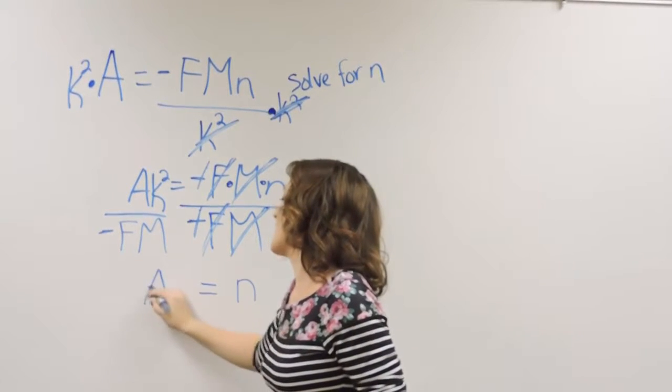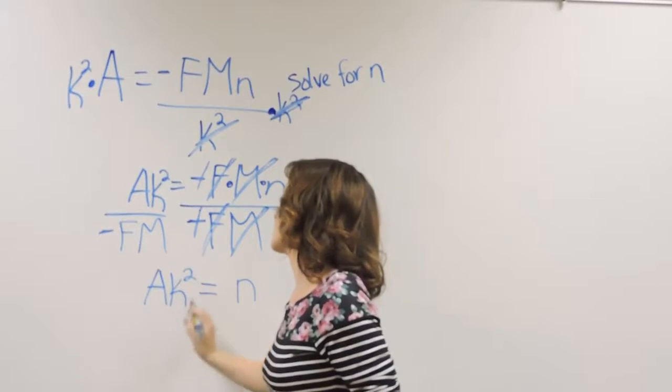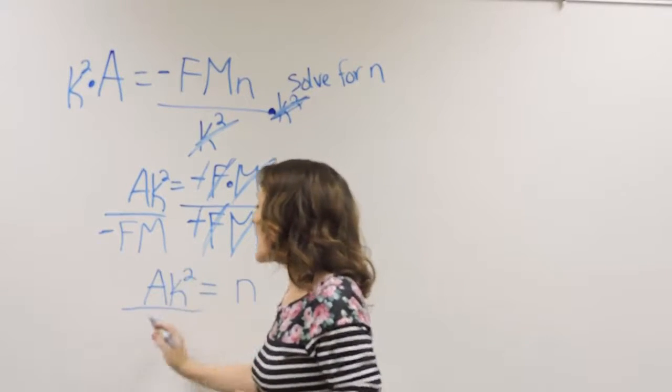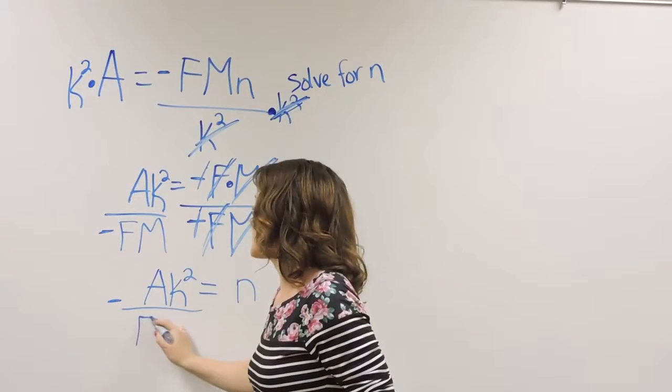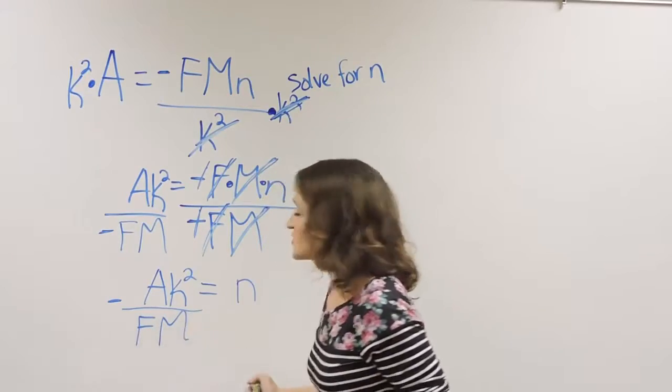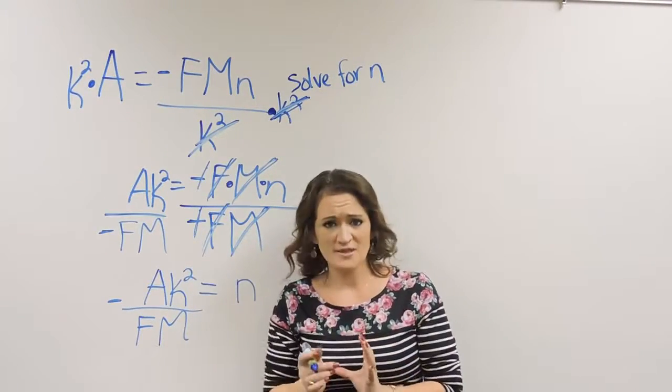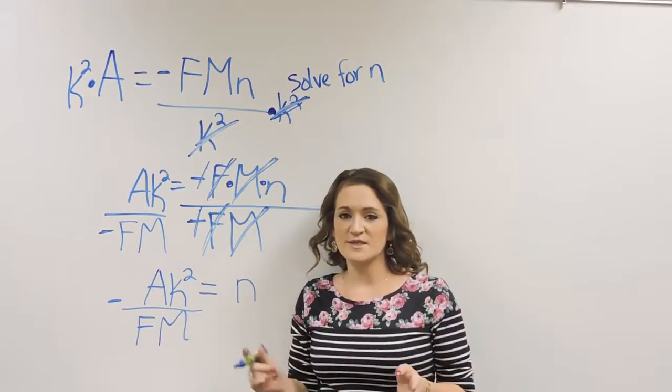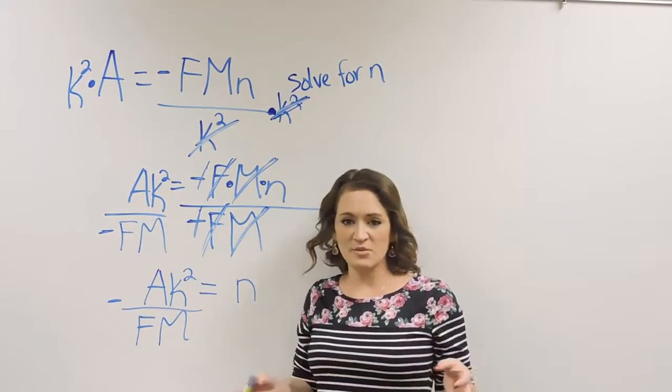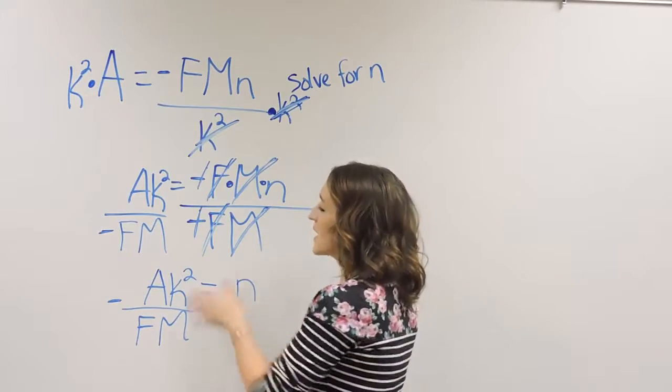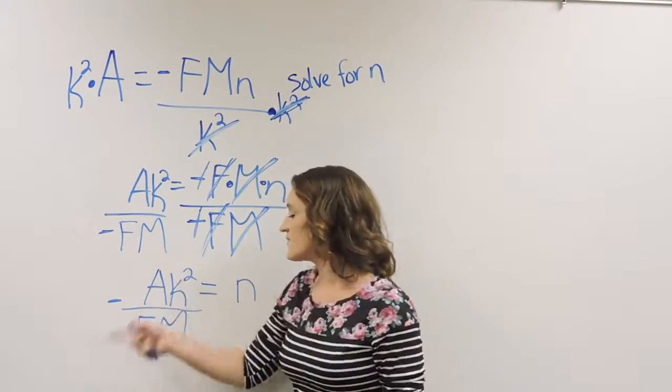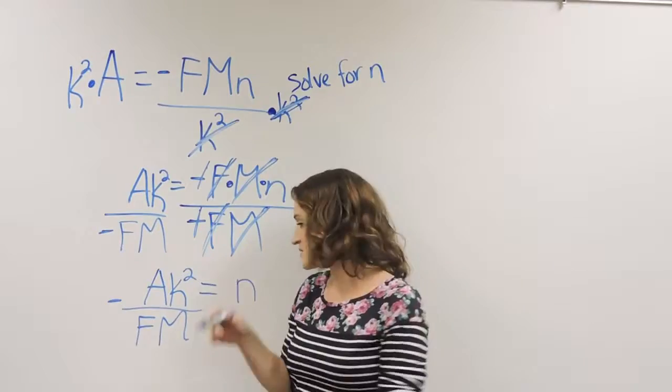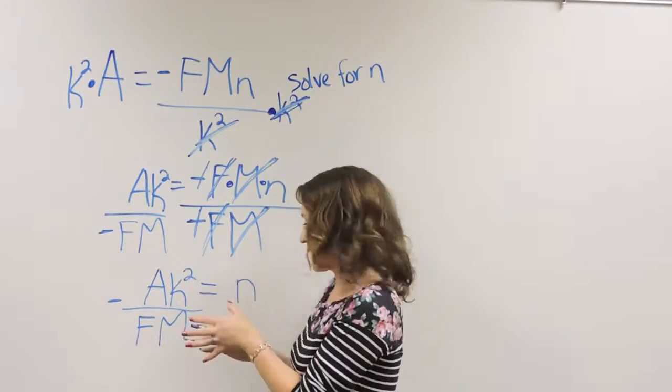And on the left-hand side, we had a k squared. And then we divided it by a negative f m. So just compile that all together. None of these variables, none of these letters are the same. We can't actually combine them or calculate them together. So we had a k squared. We're dividing it by the negative f m. So literally just put that all together there.